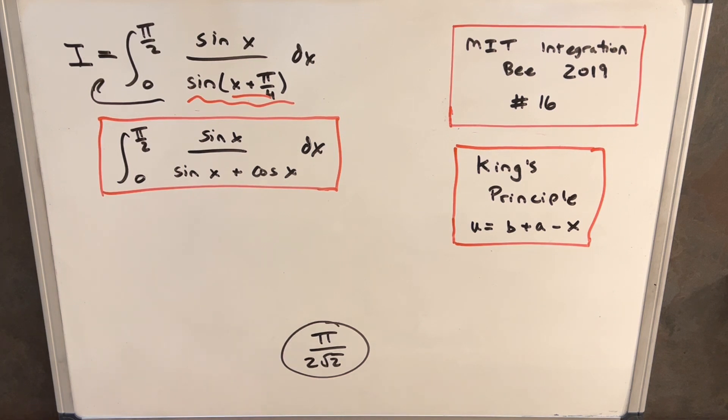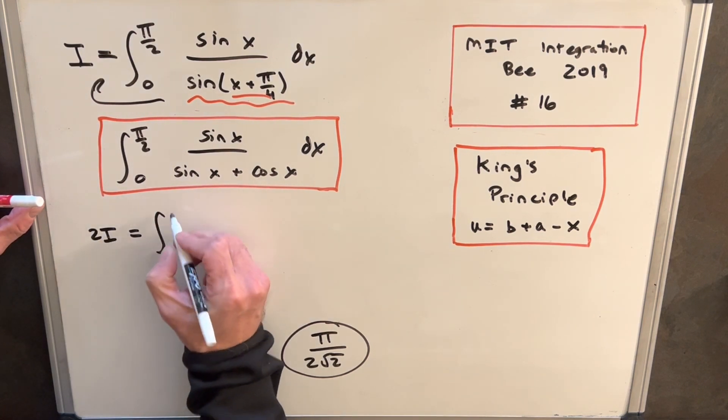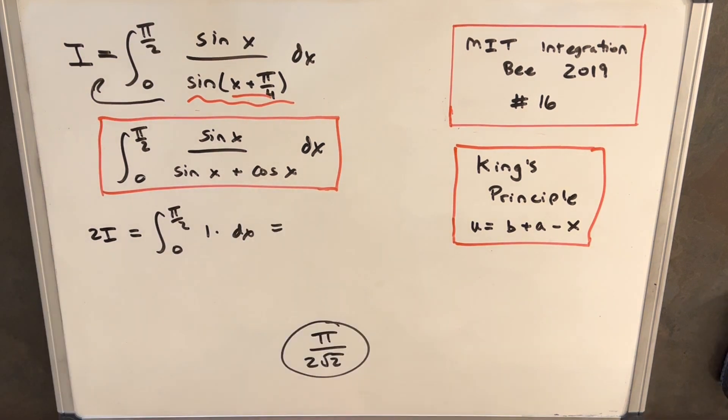So essentially what you can do is, when you see this familiar form, and there's a few different forms like this, you can kind of just jump to 2i equals pi over 2 to 0 of 1dx. So once you see that the integral is just going to become one.